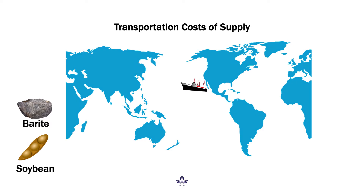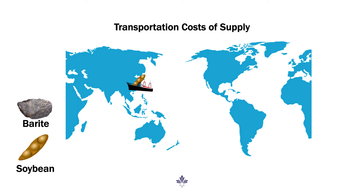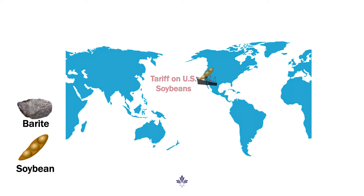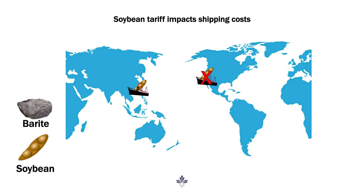Transportation costs vary based upon a number of factors beyond the location of the ore. For example, China imports substantial amounts of soybeans from the United States. The vessels arrive in China to offload soybeans and many return with raw materials, including Barite ore, to the United States. When China placed tariffs on American soybeans, many of these vessels were rerouted to other regions of the globe, particularly South America, reducing the number of vessels available to carry Barite from China and increasing costs.